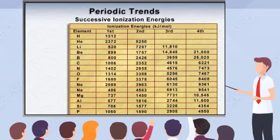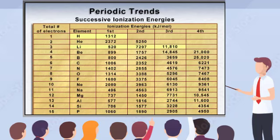The table on the screen shows the energy required to pull successive numbers of electrons away from atoms. Notice that hydrogen has only one ionization energy value, whereas lithium has three, corresponding exactly to the numbers of electrons each atom possesses, and consequently to the number of electrons that could possibly be removed. Also, notice that the ionization energies don't gradually increase for each element.